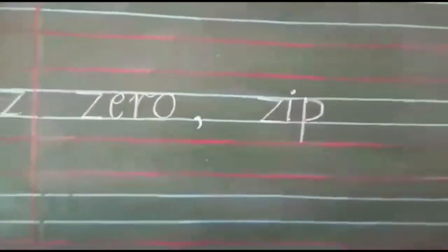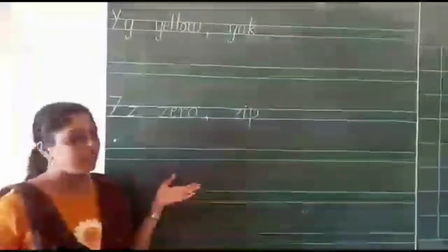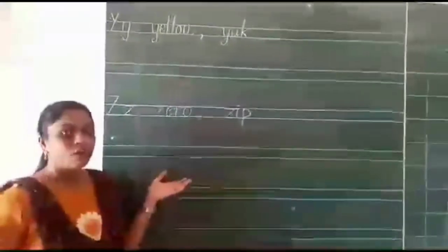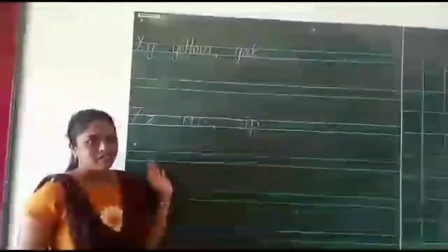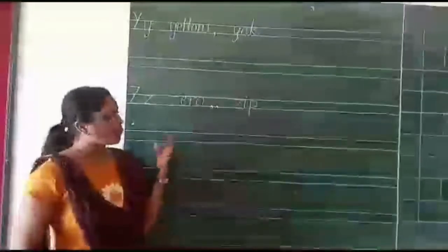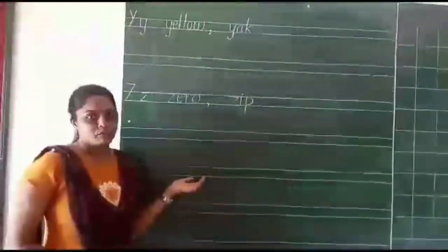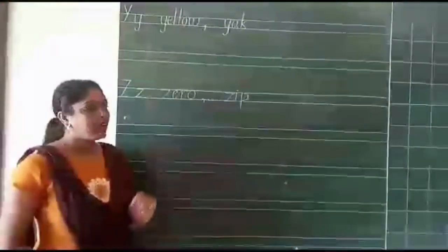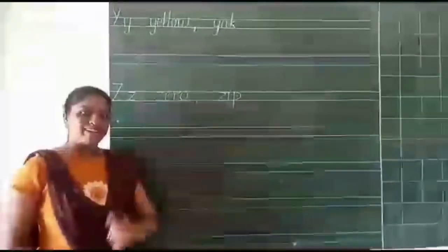Okay, children, here we have completed writing all the beginning sounds of each and every letter from A to Z. So now you also have to write like this in your CW book with very nice handwriting. And children, you can write any words, whichever spelling you know to write. Okay, bye-bye.